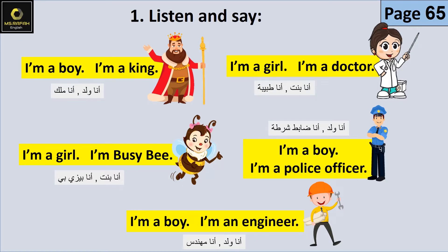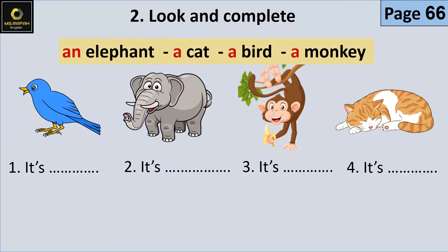I'm a girl. So we can say: one king, five doctors, six police officers — but we cannot say 'six runs' or 'four jumps' with an article. We place 'A' or 'AN' before a singular noun. Question number two: Look and complete — أنظر وأكمل. Note that 'A' is used with singular nouns starting with a consonant sound.